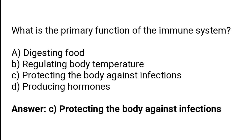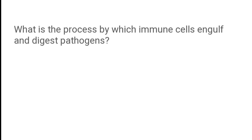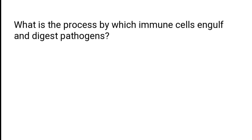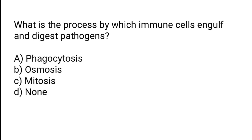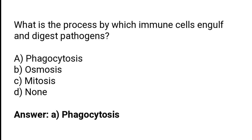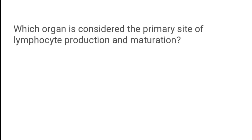What is the process by which immune cells engulf and digest pathogens? Phagocytosis, osmosis, mitosis, or none? The correct answer is option A — phagocytosis is the process by which immune cells engulf and digest pathogens.